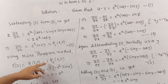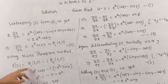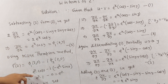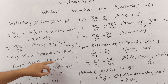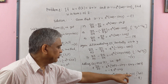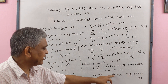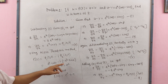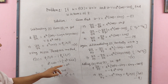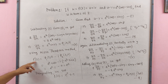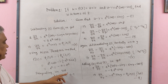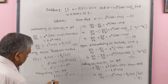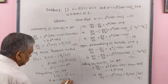Using the Milne-Thompson method: f'(z) = φ₁(z,0) − i·φ₂(z,0). Substituting x = z, y = 0: φ₁(z,0) = eᶻ cos 0 = eᶻ, and φ₂(z,0) = −eᶻ sin 0 = 0. Therefore f'(z) = eᶻ. Integrating both sides: w = f(z) = eᶻ + c.